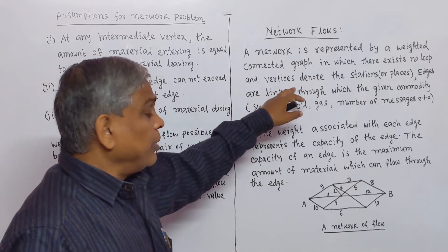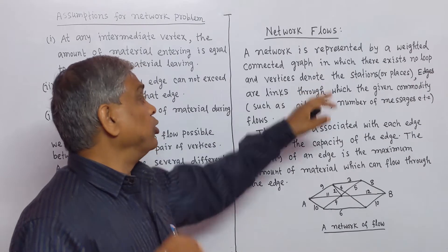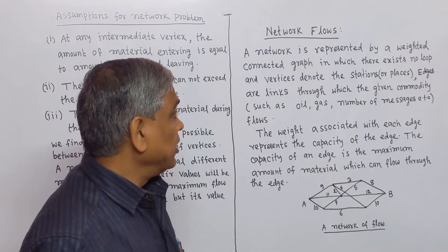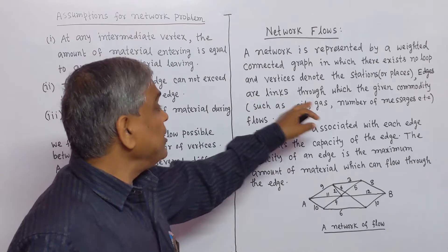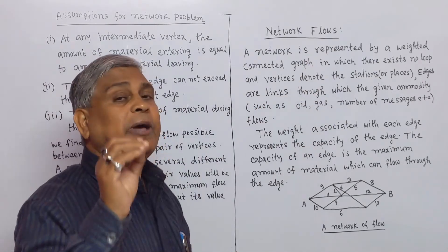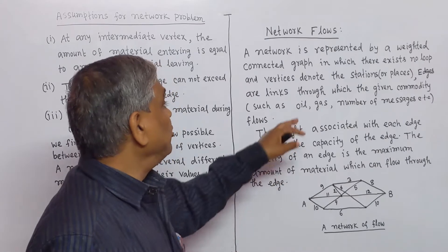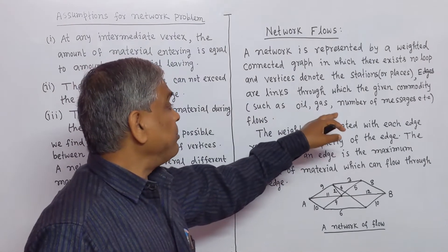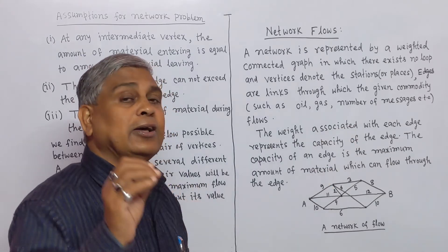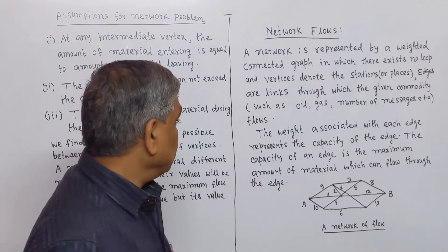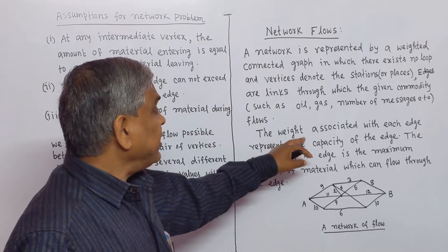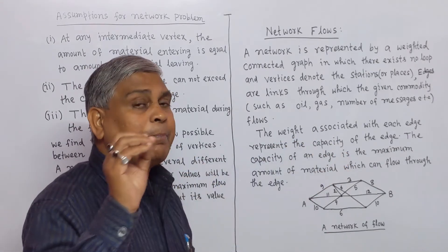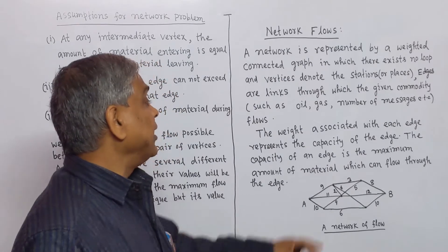Here, vertices denote the stations or places. Edges are links through which the given commodity — such as oil, gas, number of messages, etc. — flows. The weight associated with each edge represents the capacity of the edge.